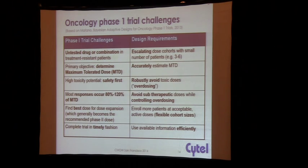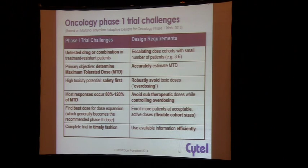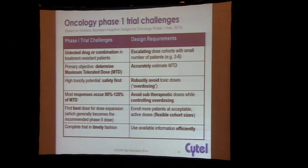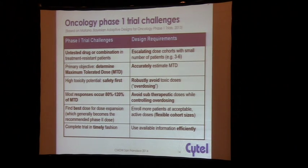Traditionally it's been thought that most responses will occur around the MTD — 80% to 120% of MTD — which drives the need for trying to avoid sub-therapeutic doses as well as controlling overdosing. So you want to try to escalate quickly and then not overdose. Once you figure out the best dose for expansion, you want to enroll more patients at some acceptable active doses to study the potential activity of the compound.